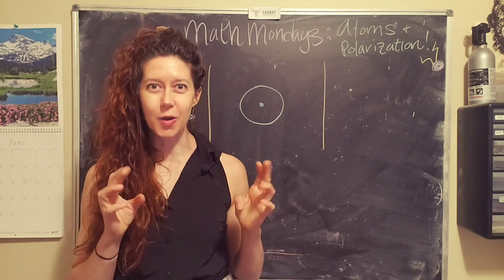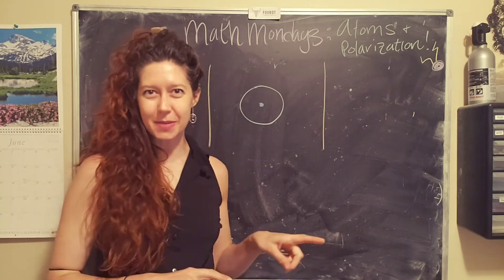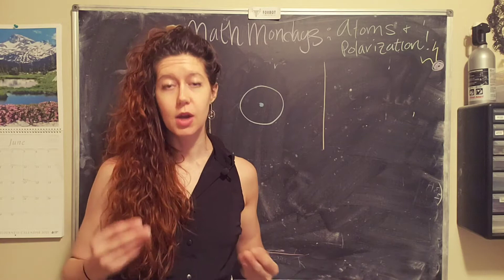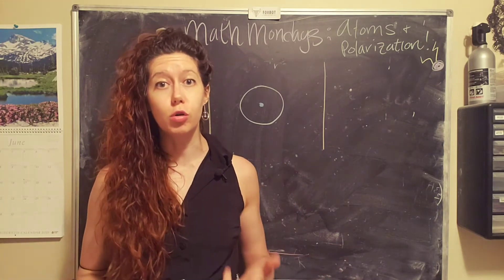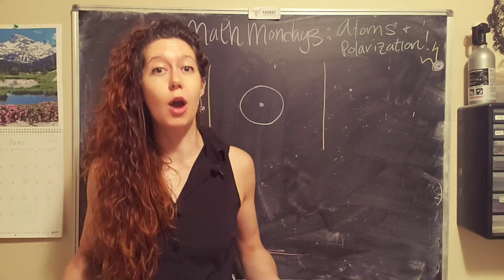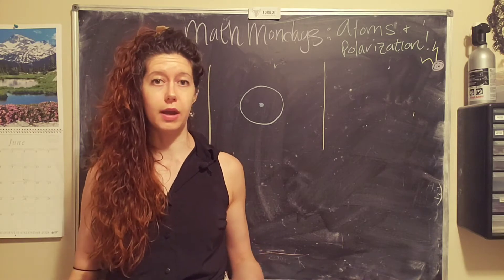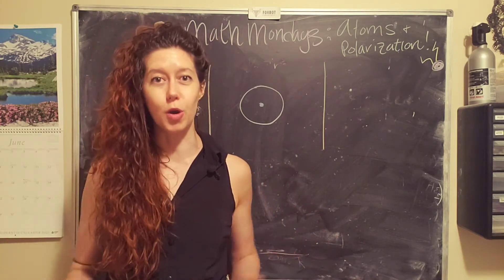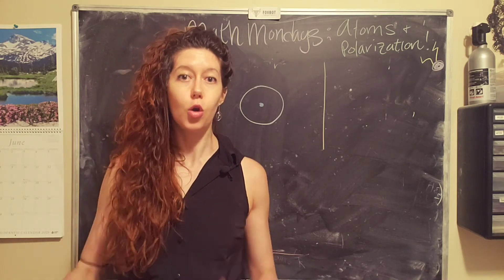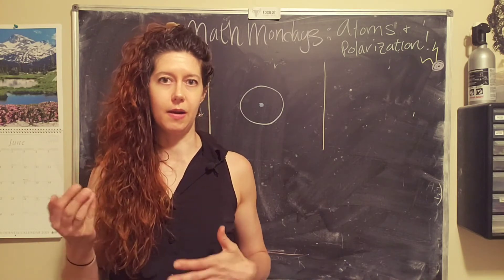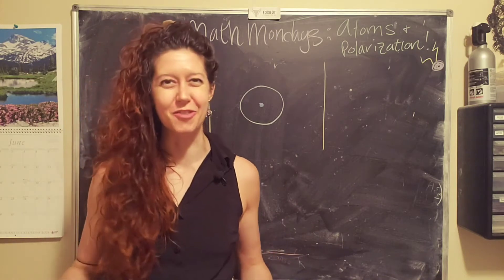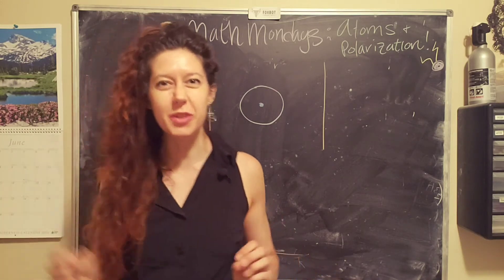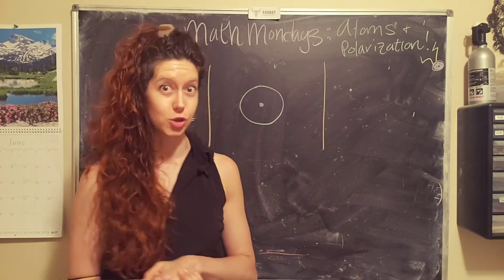In this episode of Math Mondays, we are continuing our exploration of how electricity affects matter. In the last episode, we looked at atomic polarizability, which is how much a specific element will react or move to an external electric field. In this episode, we're going to actually calculate how much the nucleus of an atom will move in the presence of a defined electric field, and then look at how much energy it would take to ionize the atom or completely strip away the electrons from the nucleus of a hydrogen atom.